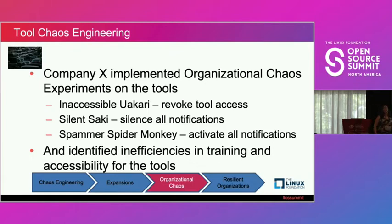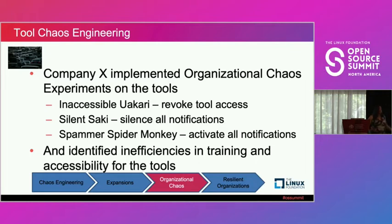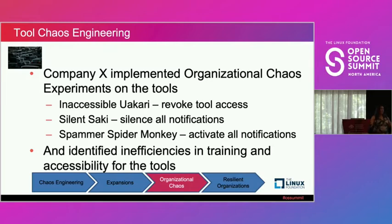Silent Sake takes all the automated notifications that people depend on for their processes and shuts them all off — no notifications at all. The point is to detect whether people understand the normal business rhythm and process flow, and whether they notice when they don't get those notifications. Do they know to go check the tool, or do they completely forget and the process stalls? Spammer Spider Monkey is the opposite — turning on every possible notification within a given tool, which can be infuriating. The key there is: do people know how to go in and set those notifications back down to the level they want, so they can cut through the noise and pay attention to only what they need?